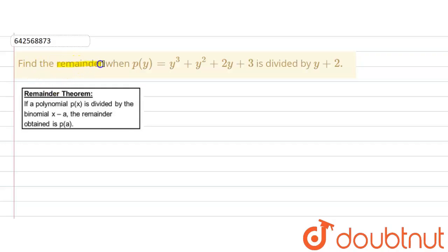The given question says that find the remainder when P(y) = y³ + y² + 2y + 3 is divided by y + 2. So the divisor is y + 2.